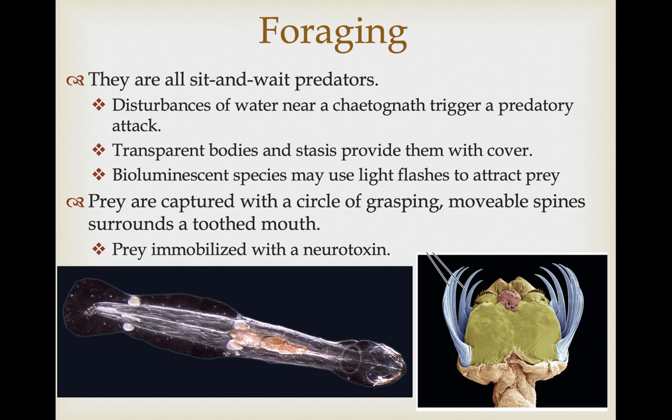Prey are captured with the movable spines, which have complex musculature at their base allowing individual spine control. Once prey are captured, they can be immobilized with neurotoxins — and we'll talk more about how they acquire those neurotoxins, which actually come from symbiotic bacteria they are housing.